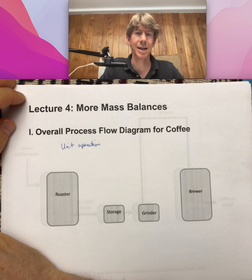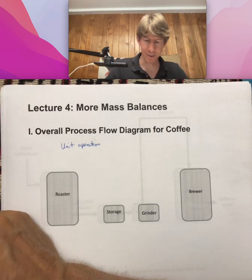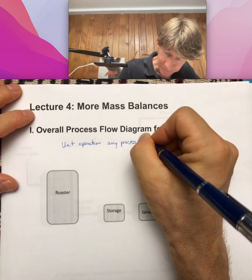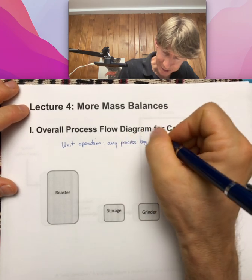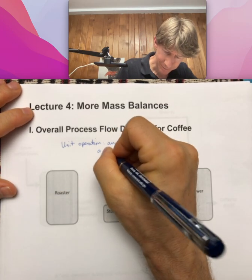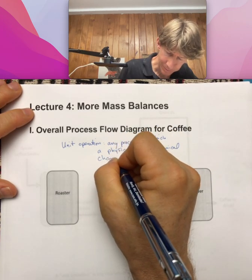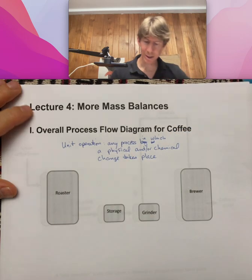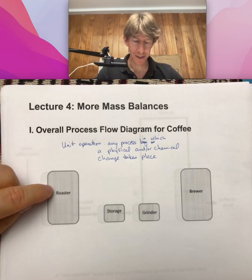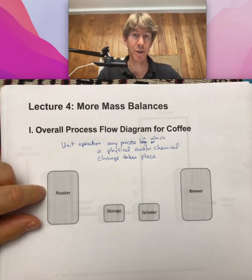A unit operation is any process step in which a physical or chemical change takes place. In a roaster, both a physical and a chemical change occur. The physical change would be the change in the size of the beans, and a chemical change takes place because the beans burn — and burning is a chemical reaction.